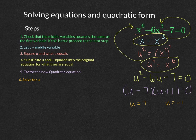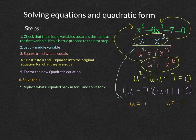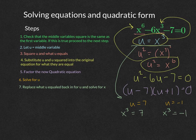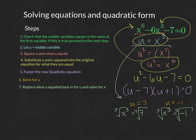The only problem is that we're not solving for u — we need to find x. Since u equals x cubed, we replace u: x cubed equals 7 and x cubed equals negative 1. To solve for x, take the cube root of both sides. So x equals the cube root of 7, and x equals the cube root of negative 1, which is negative 1.